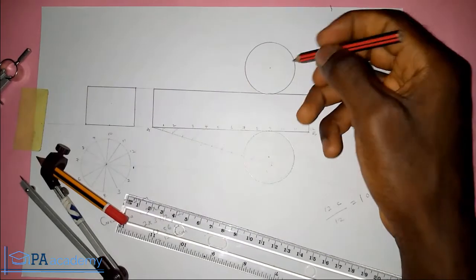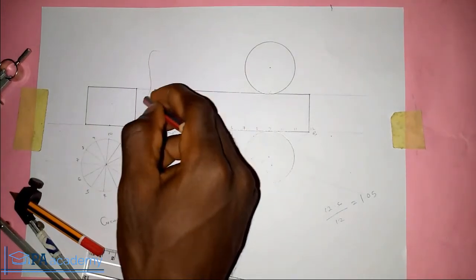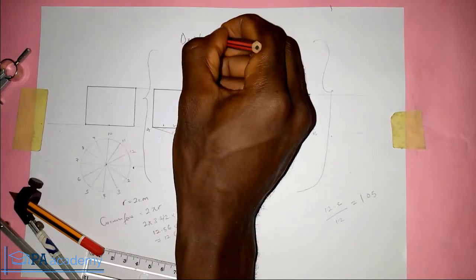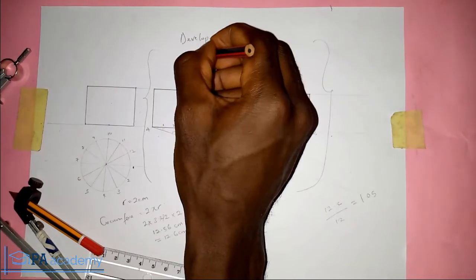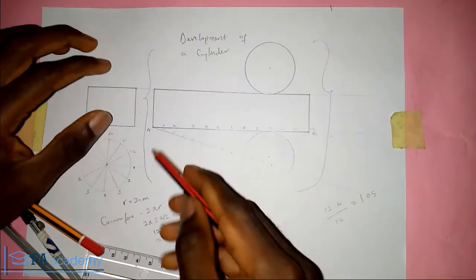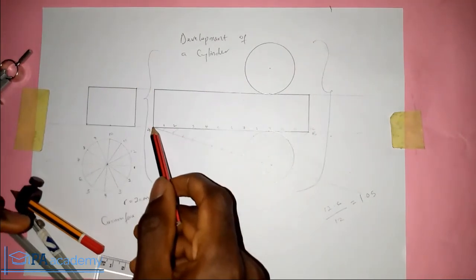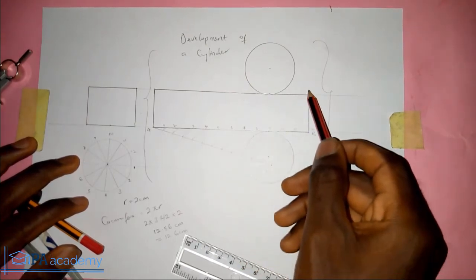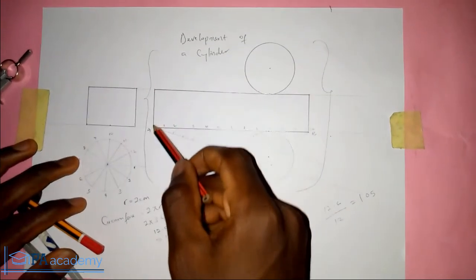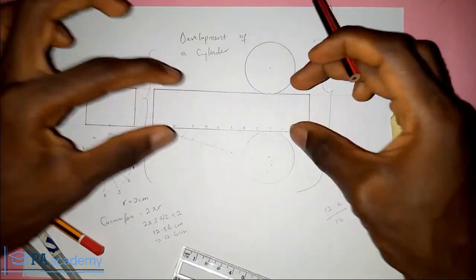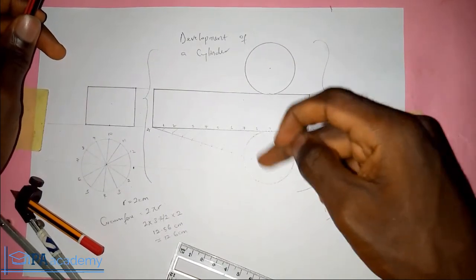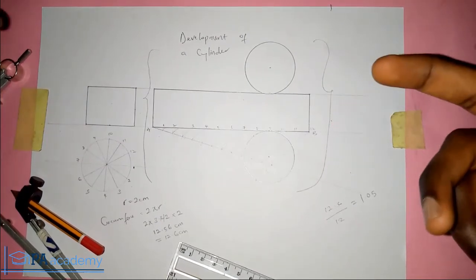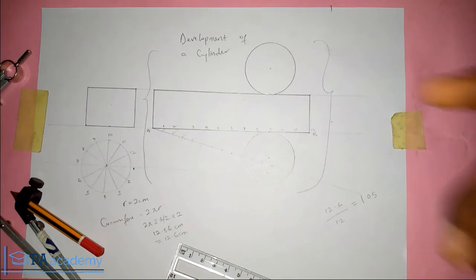Now what this means is that from this point to this point, this is the part that represents the development of a cylinder. If you cut from this point straight down to point nine, cut out the circle, and back to point B straight up, then cut out the top circle and cut back — by the time you cut it all out you'll be able to fold it. This circle represents the top of the cylinder and the lower circle represents the base, and you've been able to form a cylinder. That is what this drawing is all about — how to draw the development of a cylinder.